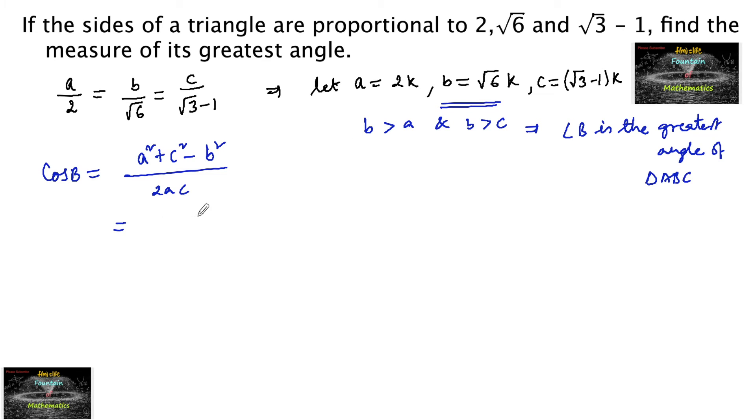Which equals 4k squared plus root 3 minus 1 whole squared times k squared minus root 6 whole squared, that is 6k squared, upon 2 times 2k times root 3 minus 1 times k.